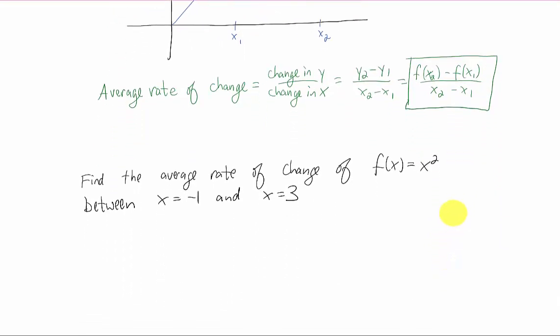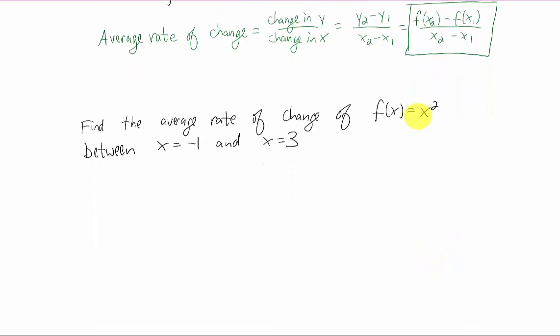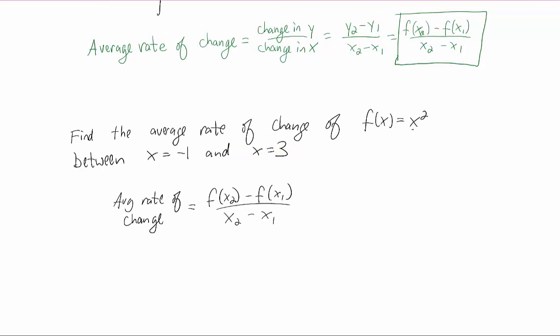Let's do an example. Let's find the average rate of change of this specific function x squared between the x values negative one and three. So I just wrote down our formula for average rate of change, and x₂ is gonna be the bigger of our x values, and x₁ will be the smaller of the x values. I'm just gonna plug x₂ equals three in, and x₁ equals negative one.